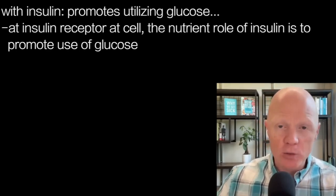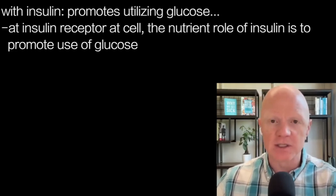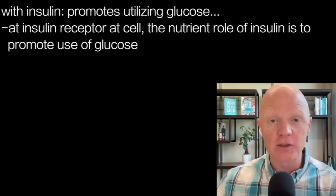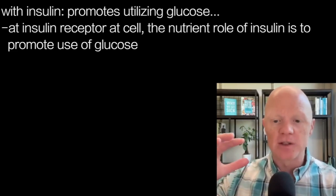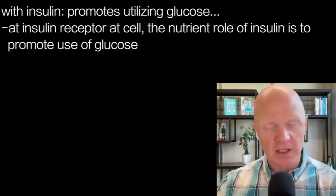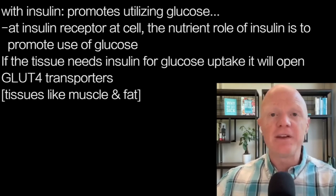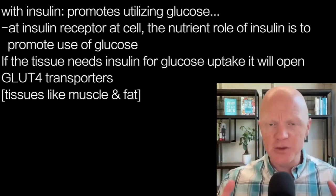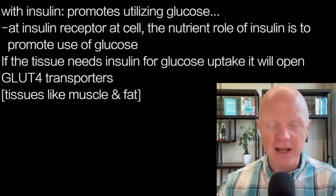With insulin, we have the promotion of glucose utilization. Insulin's actions coordinate to prevent the body from burning fat — it wants the body to use glucose as a fuel. When insulin docks to its receptor on a cell, all of its metabolic biochemistry will promote the use of glucose. In tissues that need insulin for glucose uptake, it opens glucose transporters called GLUT4. If a tissue has GLUT4 — like muscle and fat — it generally needs insulin in order to act, and most of what we're made of is muscle and fat.